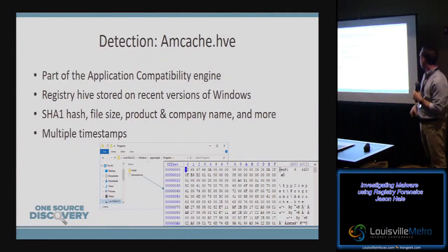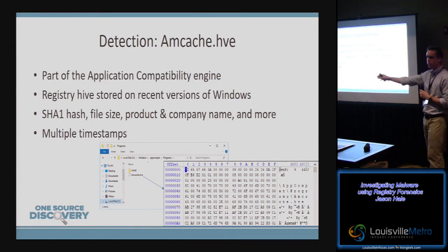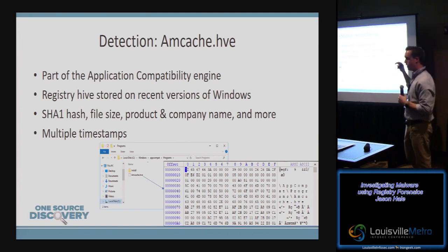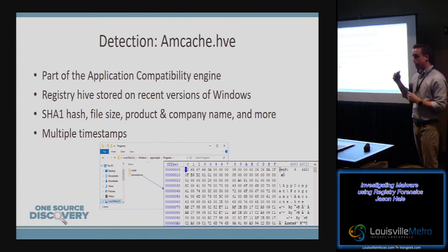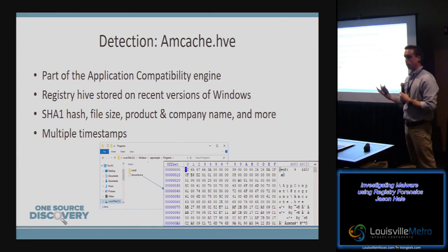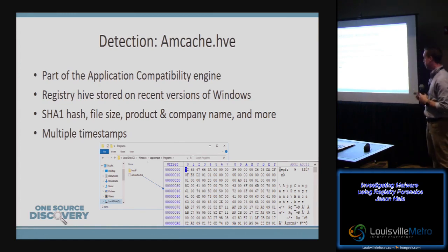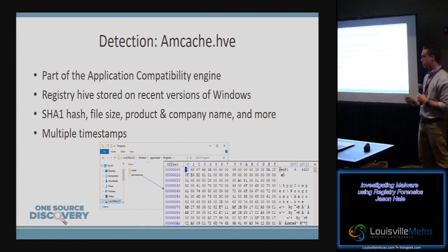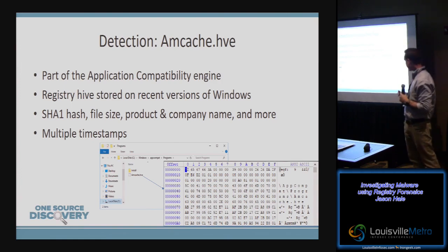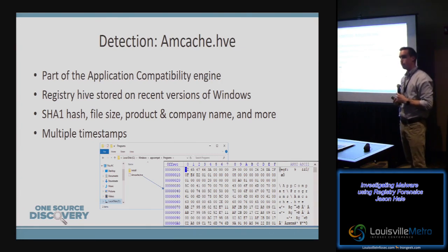AMCache is another part of the application compatibility database. Unlike AppCompatCache, this is an entire registry hive all to itself. You can load it into a registry viewer and look at it just like any other registry hive. It stores a ton of information about programs, DLLs, and executables on the system — everything from hash values, multiple timestamps, metadata about the executables, file sizes — all stored in AMCache.